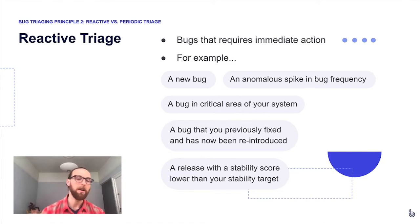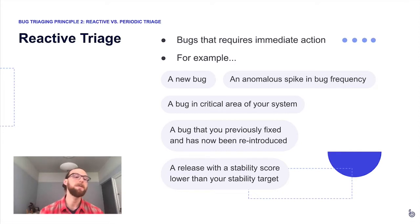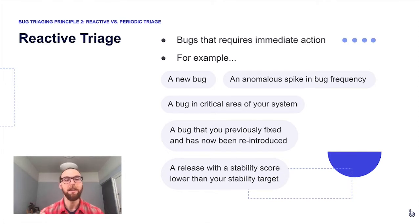Other reactive triage triggers include a bug in a critical area, a previously fixed bug that has reappeared in a future release, or a stability score being off target for your project. The crucial point is that a key category of bug triaging involves reactively jumping into BugSnag, figuring out what's going on, and making sure immediate action isn't needed to get a bug away from your users.